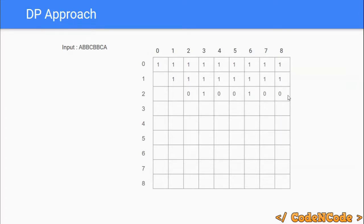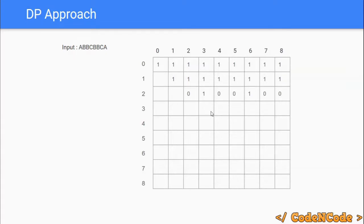Now let's start filling length-3 substrings, starting from DP[3][3]. DP[3][3] is the substring of length 3 ending at position 3, which is ABB. The first and last characters A and B do not match, so it cannot be a palindrome — we fill 0. DP[3][4] is the substring BBC; again the first and last characters do not match, so we fill 0.